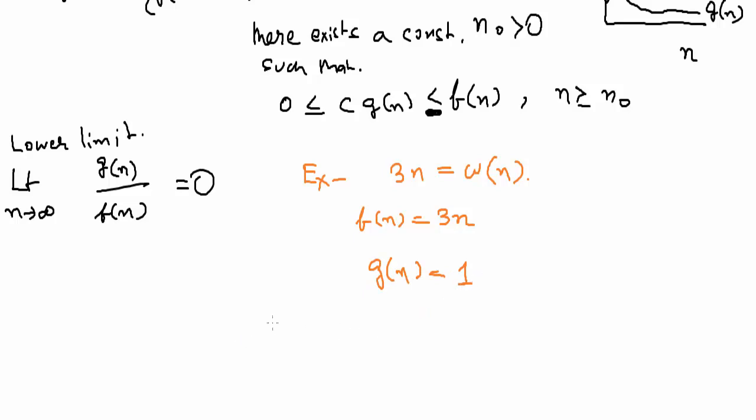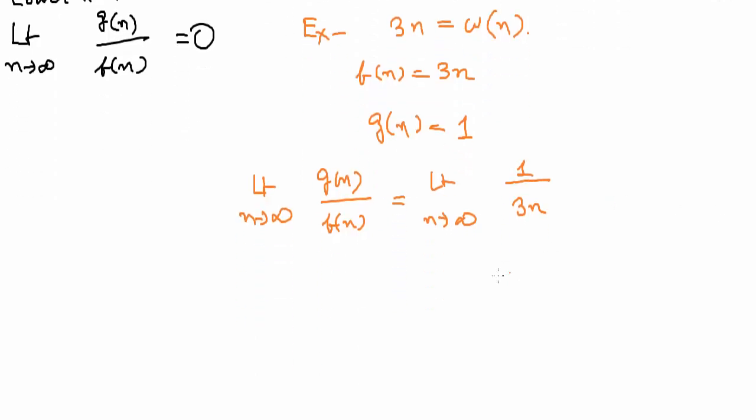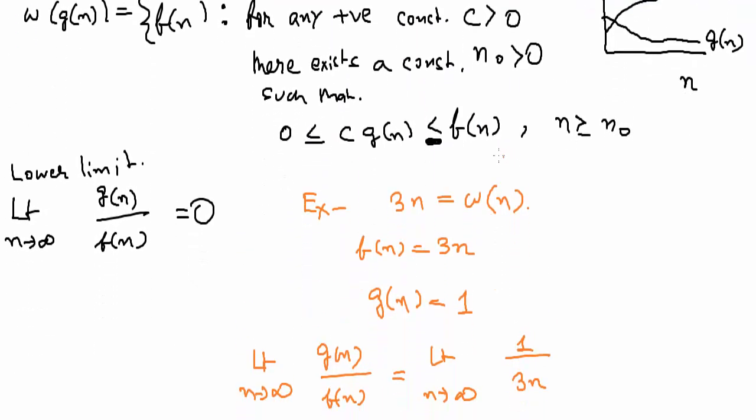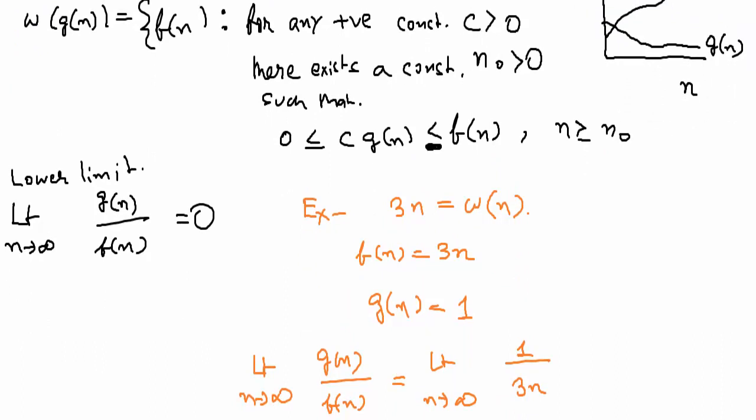Now putting the values in limit n tending to infinity, g of n upon f of n, we will get limit n tending to infinity, 1 upon 3n. Anything upon infinity is 0, so 0 got proved. We can say that this was the small omega function of n.